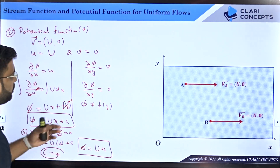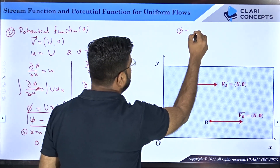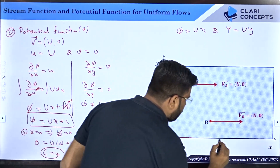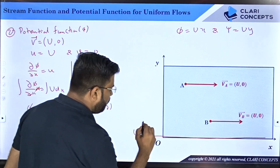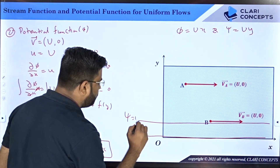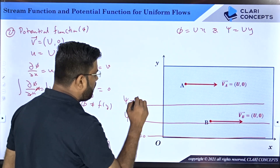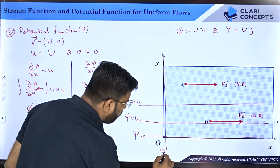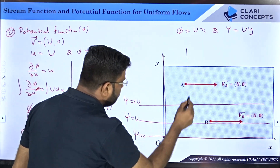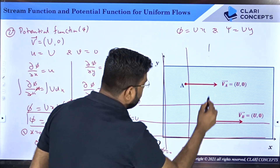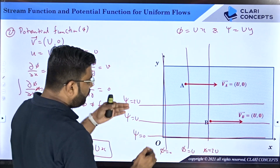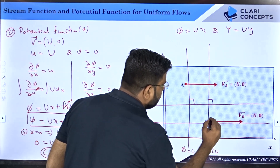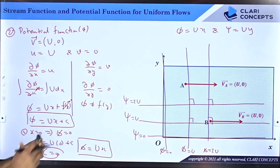At different x values you will have different phi values. For this flow, φ = Ux and ψ = Uy. At y = 0 psi is zero, at y = 1 psi equals U, at y = 2 psi equals 2U. Similarly at x = 0 phi is zero, at x = 1 phi equals U, at x = 2 phi equals 2U. Constant stream function lines and constant potential function lines always intersect at 90 degrees — this is also called a flow net.